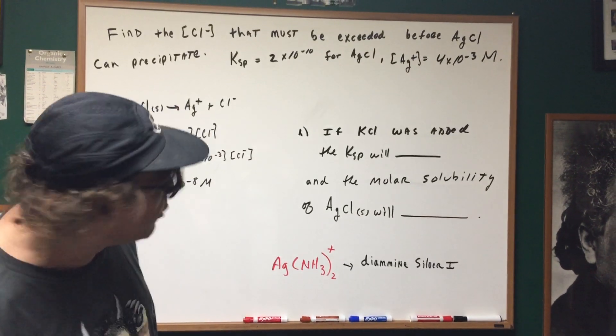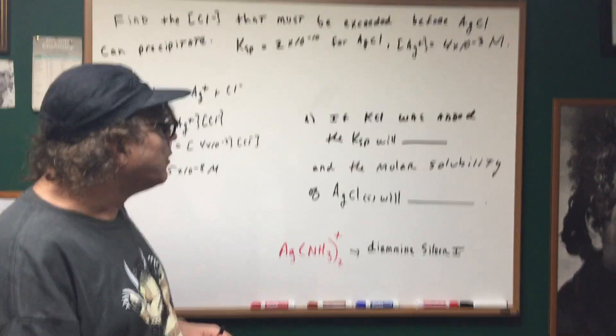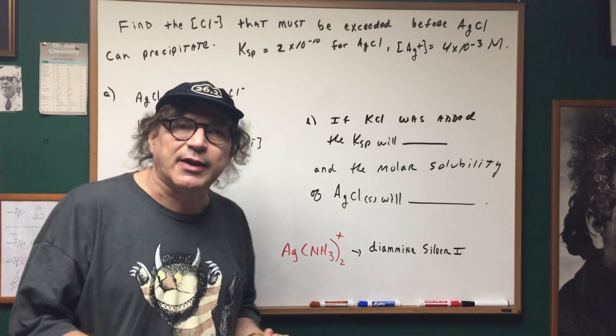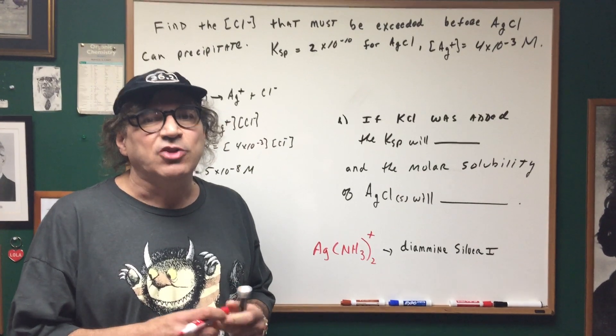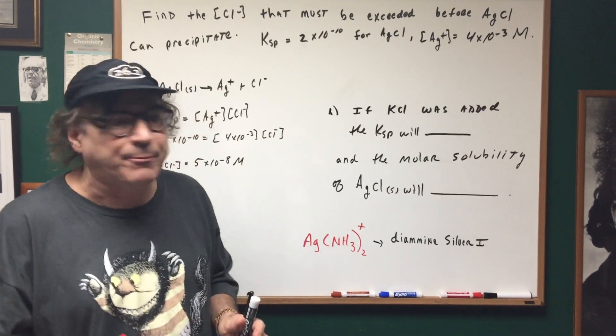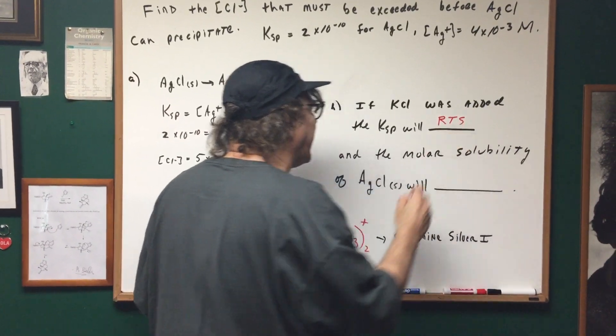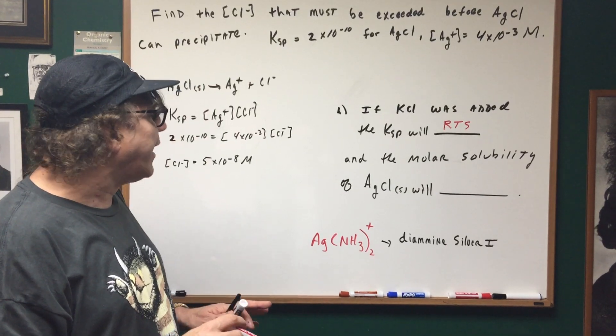Part B of this question, I say to you if potassium chloride was added, the Ksp will blank. First of all, the Ksp is an equilibrium constant and therefore equilibrium constants don't change unless you change temperature. So the Ksp will remain the same and the molar solubility of silver chloride will blank.